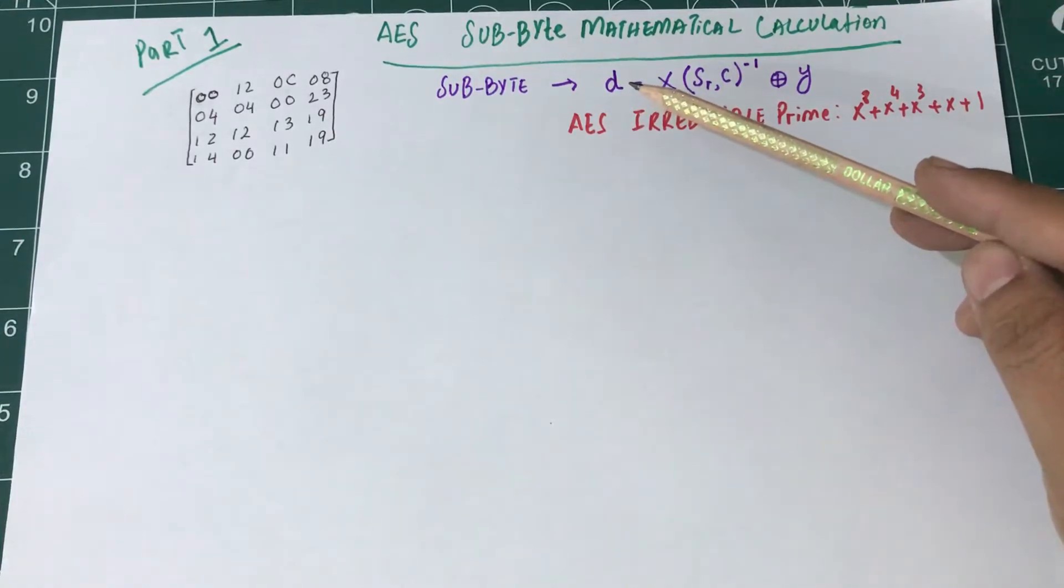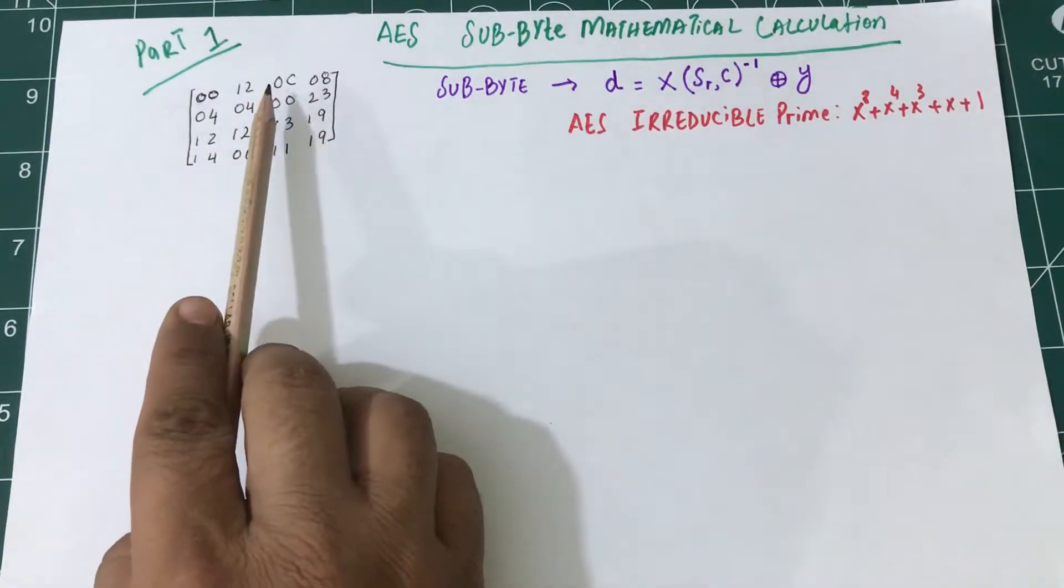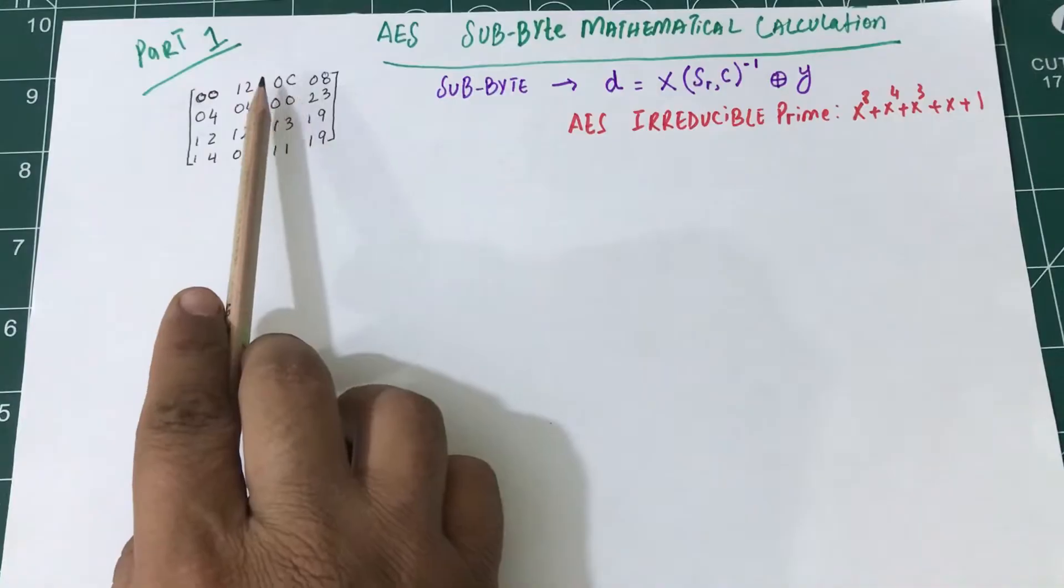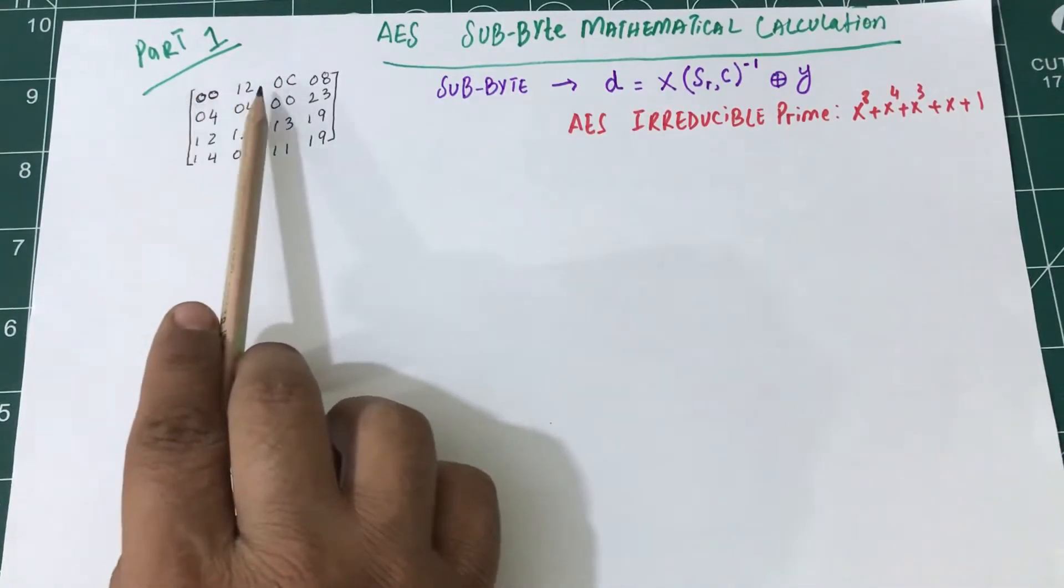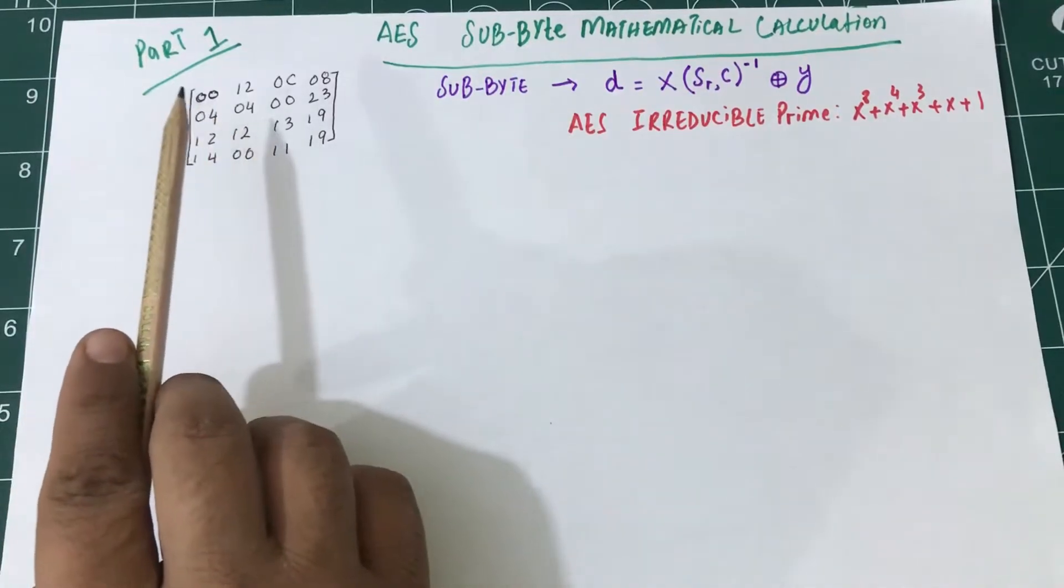Once I do all of this, that is the byte which is being transformed into the SubByte value. Normally we have to do it for all of them. I'm just going to show you how to transform one of them, and then the same process will continue for all the bytes in the state matrix.